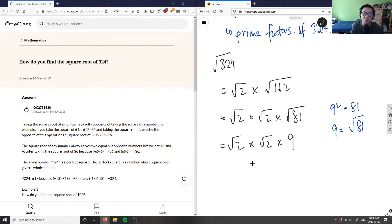What I can do now is I can group these together. So I have root 2 times root 2, which is simply root 4, times 9. Root 4 I know is 2, times 9, which will equal 18. And 18 here is my answer for this problem.